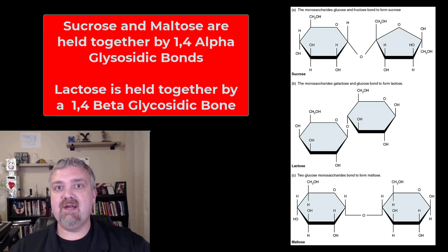So di means two, so disaccharides are two monosaccharides put together. They're actually built by a dehydration synthesis reaction, and we'll look at the combinations in just a moment. They're held together by what are called glycosidic bonds, glyco meaning sugar. They are 1,4-alpha or beta glycosidic bonds.